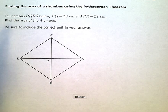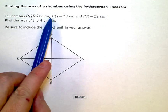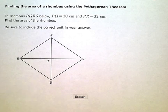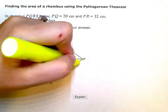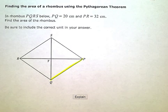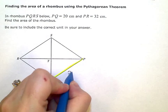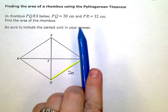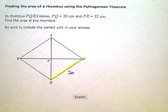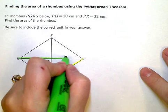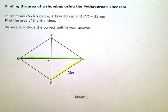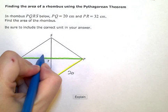Finding the area of a rhombus using the Pythagorean theorem. In rhombus PQRS below, PQ or the distance from P to Q is 20. So this distance right here is 20. And PR is 32. So PR, this distance all the way across here is 32.